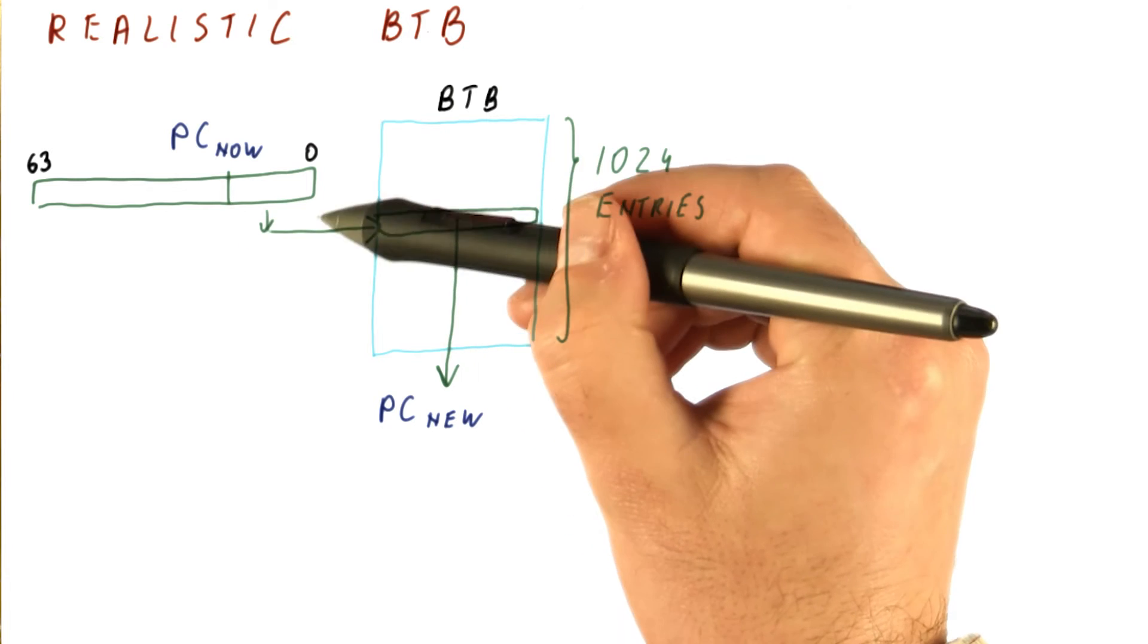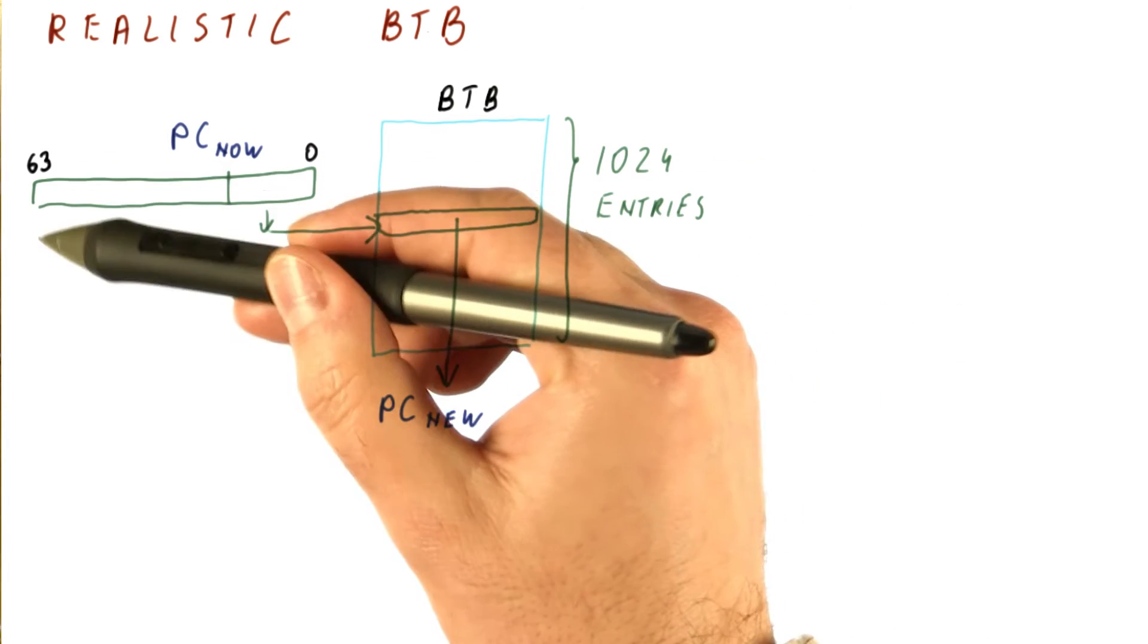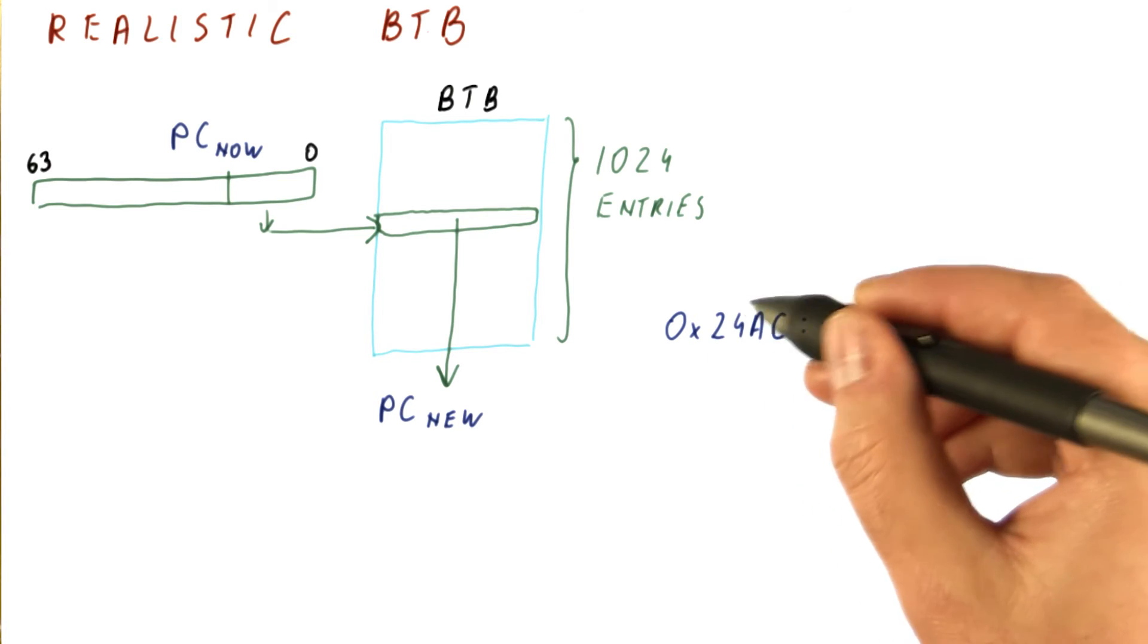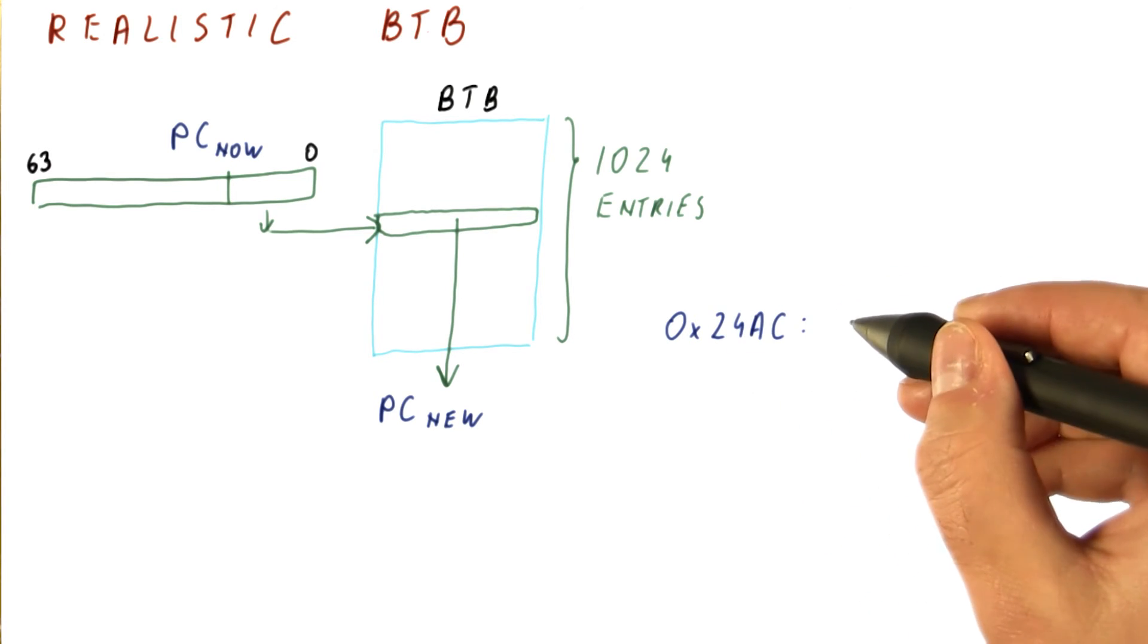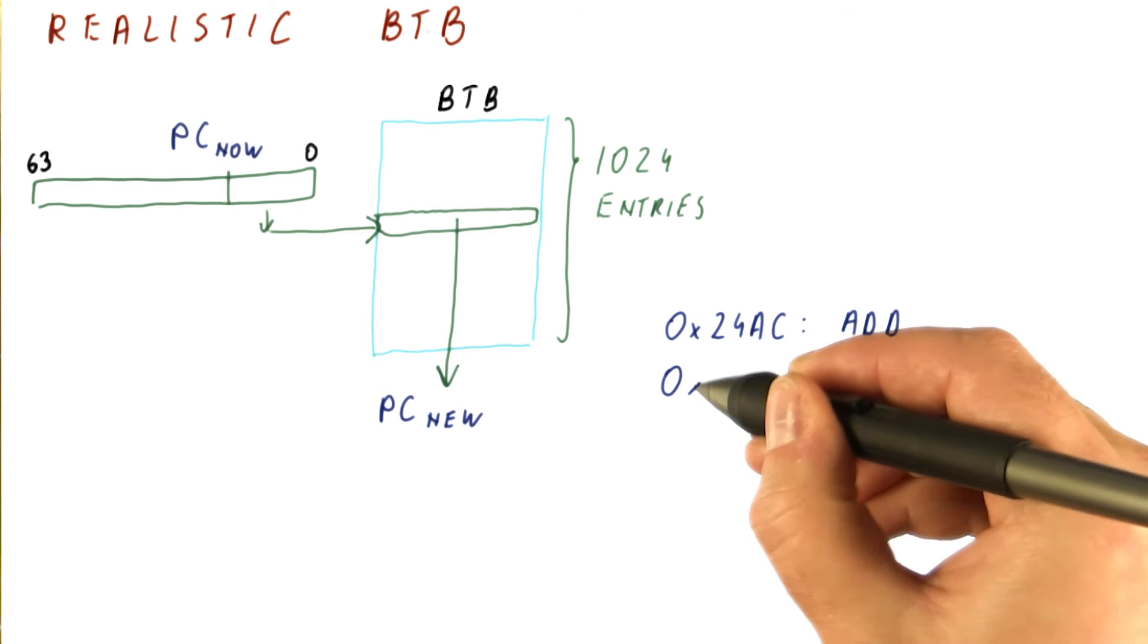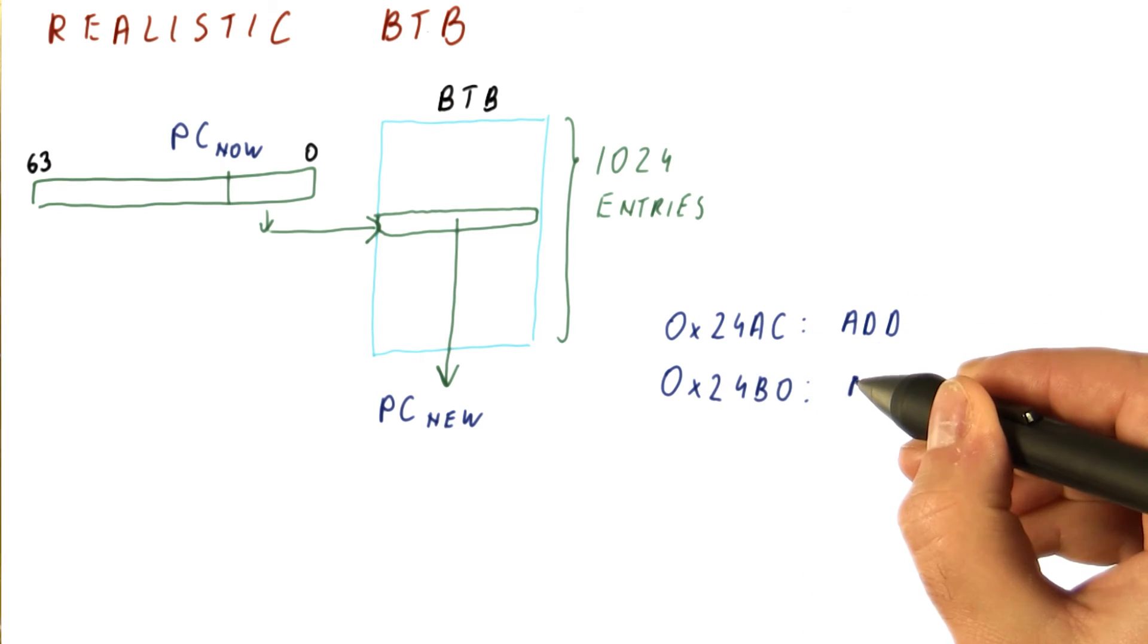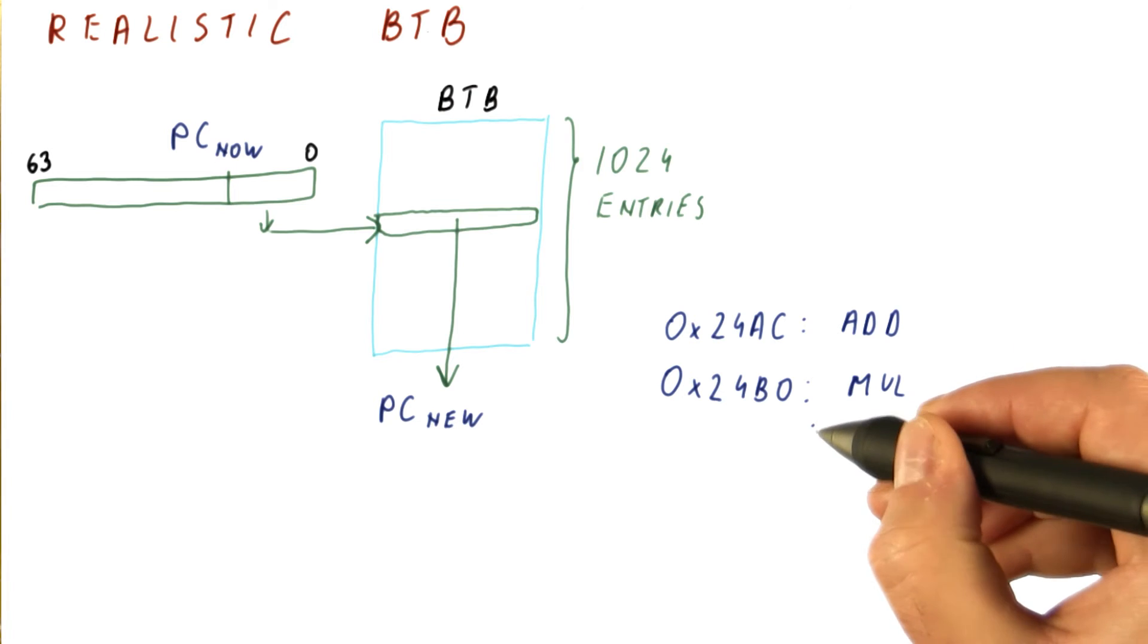Why are we using the least significant bits and not the most significant bits? Think about a typical program where an instruction has some sort of PC address, and then the next instruction will have an address that is very close to it. For example, just increment by four, and so on.